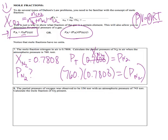To three sig figs, we get 593 torr. And that makes sense — it better be less than the total. Whatever other gases there are, their partial pressures when added will equal 760 torr.